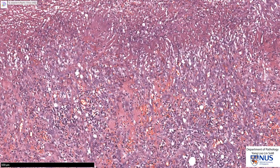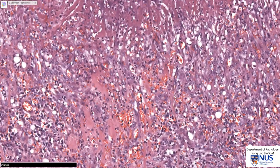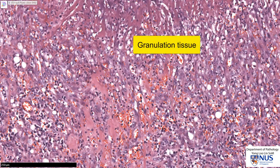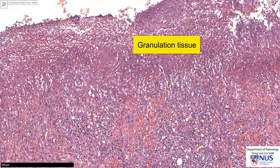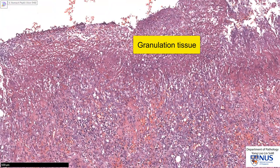Below that, we can see a lot of small blood vessels. These are all red blood cells located within the lumina of small newly formed blood vessels. And this is the zone of granulation tissue.